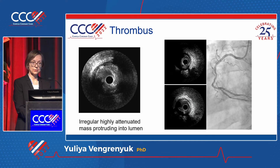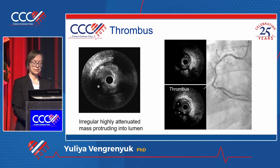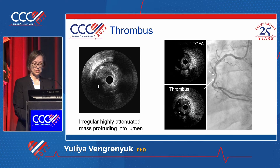This is thrombus identified by IVUS — it's usually an irregular, highly attenuated mass protruding into the lumen. Sometimes it's not easy to differentiate between thrombus and lipid-rich plaque with a thin cap (thin-cap fibroatheroma), because the thin cap is not visualized by IVUS.